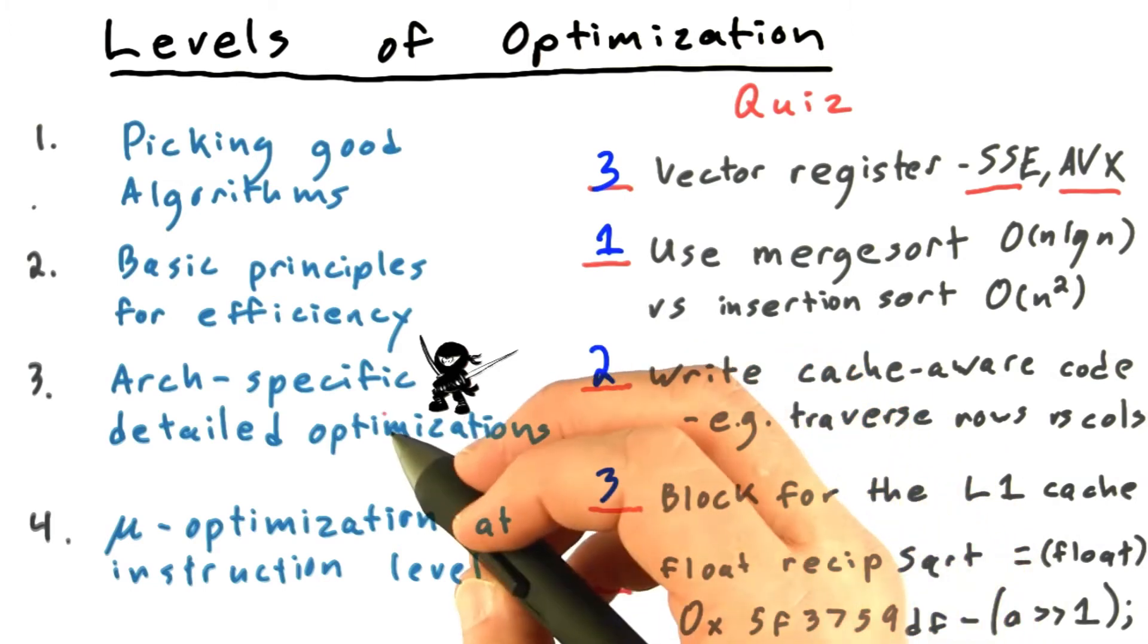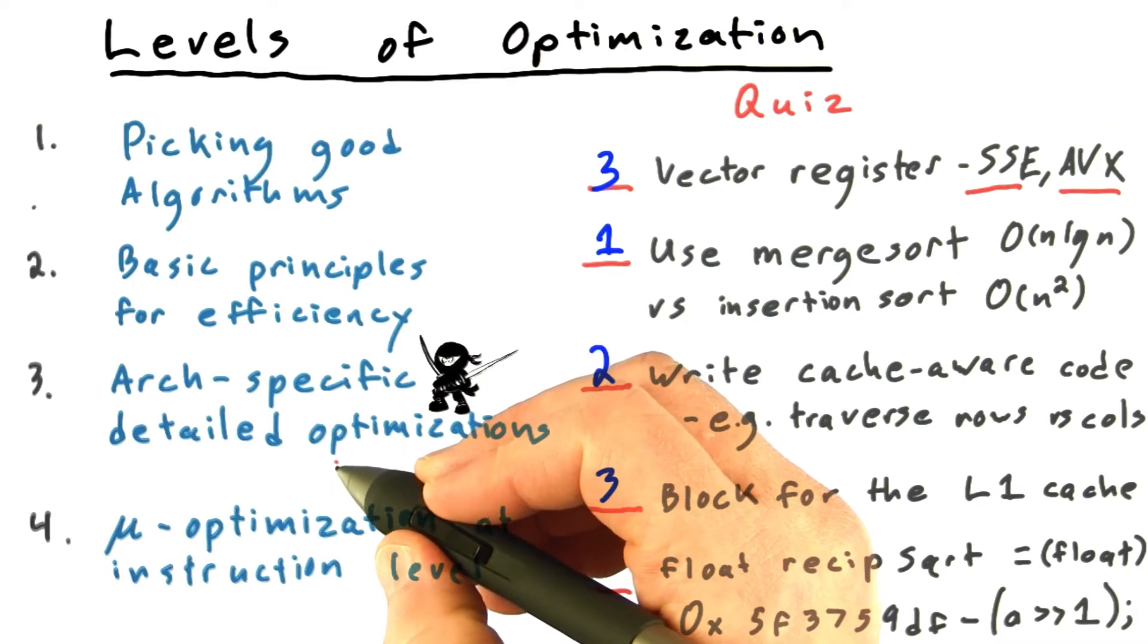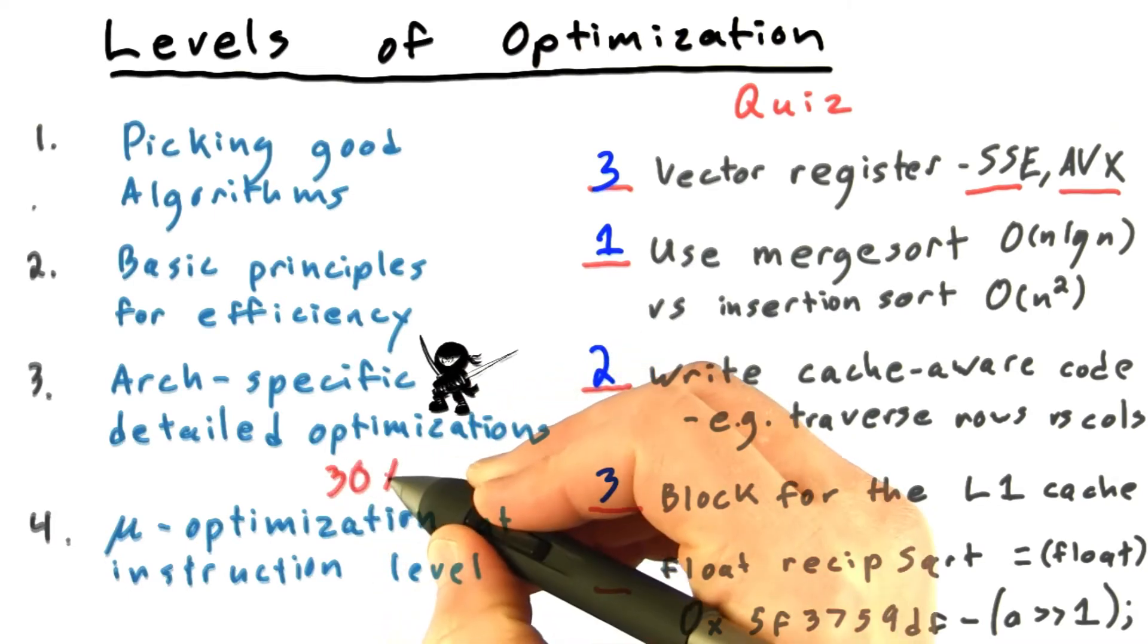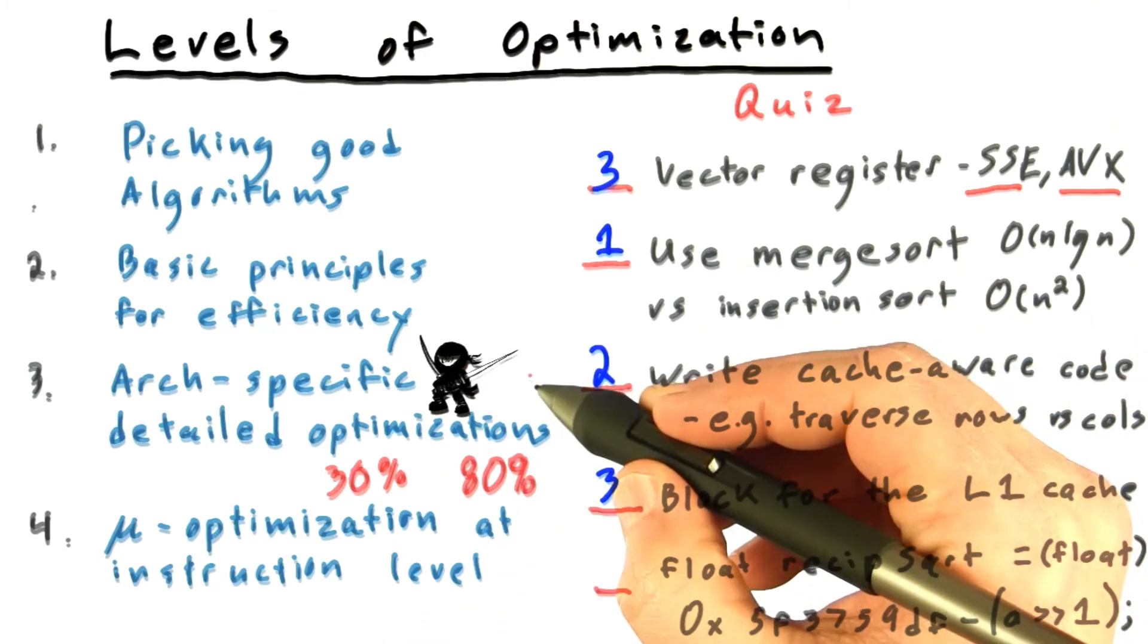On the GPU, for the most part, as a rule of thumb, the speedups to be gained by these sort of ninja optimizations are usually comparatively minor. We're talking more like a 30% or 80% speedup by using some of the techniques we'll talk about with this little ninja icon.